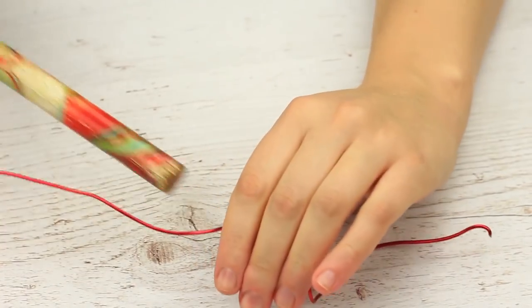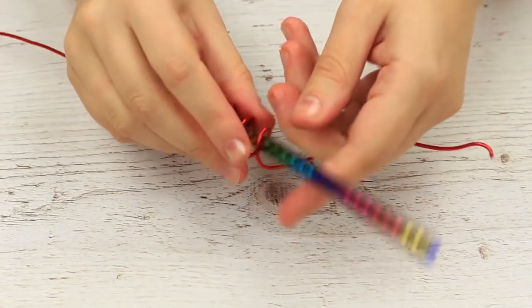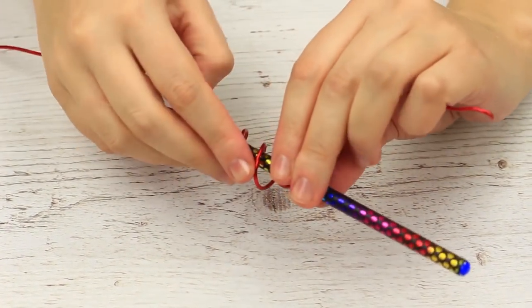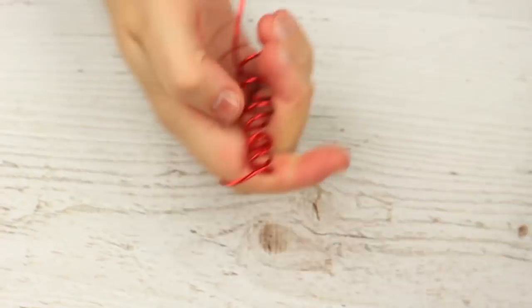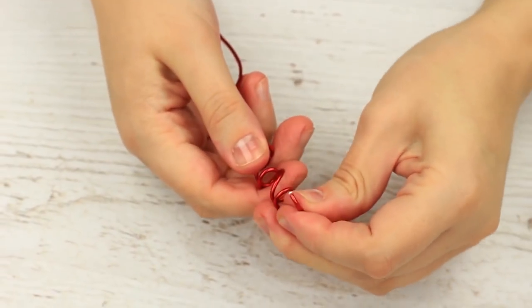When you've made three to four winds, add a thinner stick or brush handle and continue wrapping. Carefully remove the shaping object to keep the spiral. Shape it well.